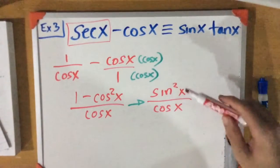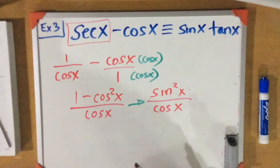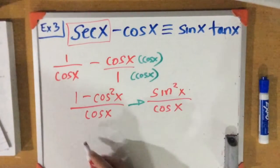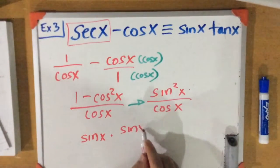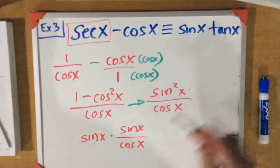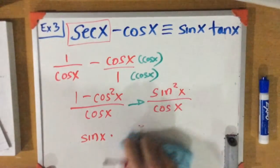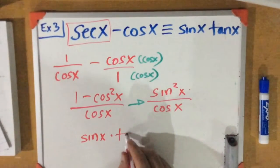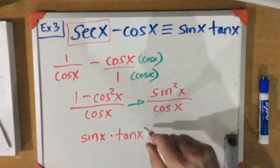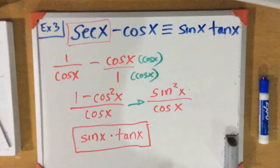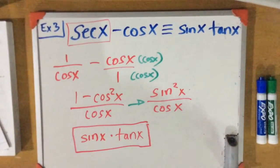All right, we have a couple more steps. We need to make this look like the right side. We have sine squared x over cosine x — let's split that apart: sine x times sine x over cosine x. Since tan is the same thing as sine over cosine, we replace sine x over cosine x with tan x, giving us sine x times tan x. We have finally proven that the left side is identical to the right side — with the help of identities, we can prove both sides are equal.